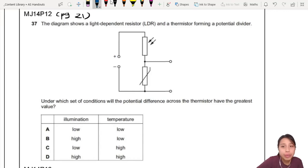So the diagram shows LDR and thermistor forming a potential divider. Because the potential is shared out between both of them. That's what we call a potential divider. We'll see more of this in Chapter 20.